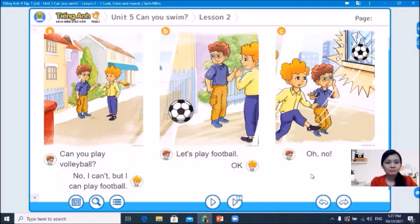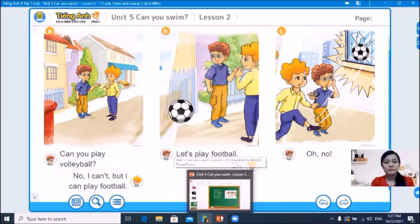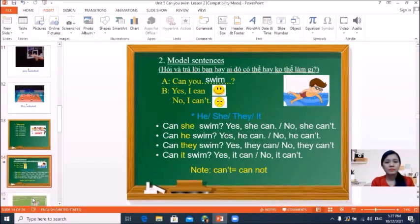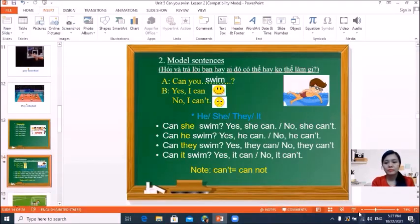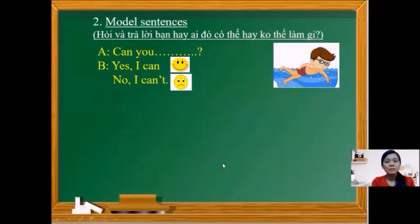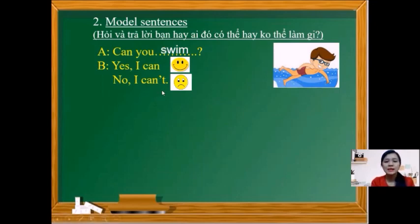Our main sentence today is the question: Can you...? For example: Can you swim? You can answer: Yes, I can. Or: No, I can't. Note: when saying 'can,' lower your voice slightly. When saying 'can't,' stress it clearly. Yes, I can. No, I can't.